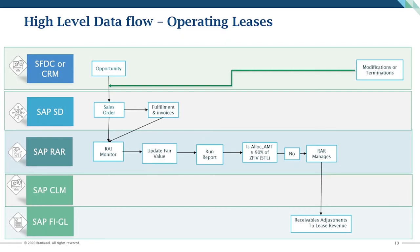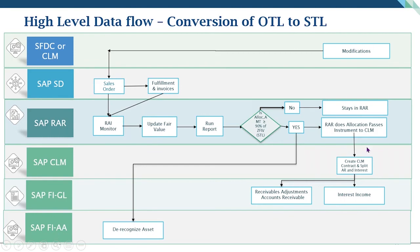The RAI monitor — the Revenue Accounting Item monitor — is the inbound processing tool that takes all relevant revenue accounting information from the original operational documents and allows you to correctly recognize the different line items. It can take information from any operational stream, whether SAP or non-SAP, and turn it into a revenue accounting contract that allows you to properly recognize that revenue.